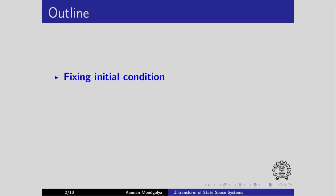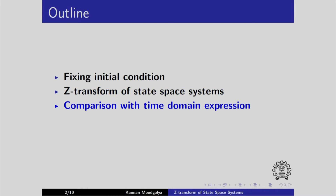Welcome to this presentation on the topic of Z transform of state space systems. The outline is as follows: for a state space system, we need an initial condition and we will discuss how to fix it. We will take the Z transform of a state space system, compare it with the time domain expression, and conclude with an example. We will also demonstrate it with Scilab.